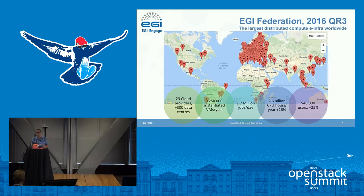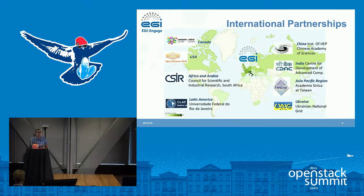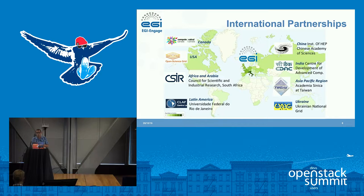There are more than 40,000 users, a 25% increase last year, and this has resulted in more than 2,000 research papers published in the last year. It's not just Europe — we have partnerships with international institutions including Compute Canada, the Open Science Grid in the USA, Africa, Arabia, Latin America, China, India, the Pacific region, Ukraine, and more.